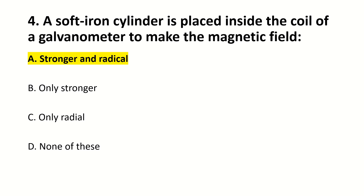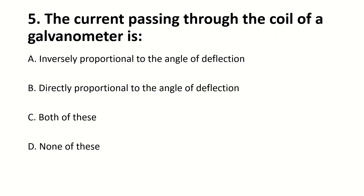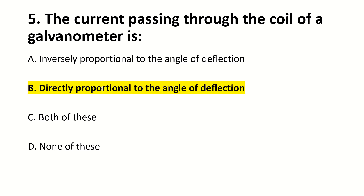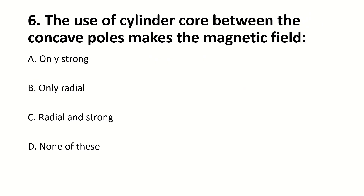Radial — radical. The current passing through the coil of a galvanometer is — blank. Right answer is B: directly proportional to the angular deflection. The use of a cylinder core between the concave poles makes the magnetic field — blank. Right answer is C: radial and strong.